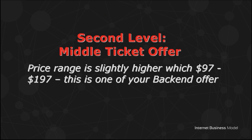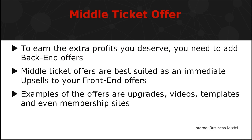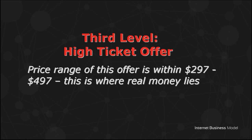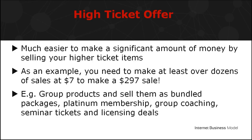The second level is the middle-ticket offer, priced between $97 and $197. Middle-ticket offers are best suited as immediate upsells to your front-end offers. Examples include upgrades, videos, templates, and even membership sites. The third funnel level is the high-ticket offer, priced between $297 and $497 — this is where the real money lies. It's much easier to make significant money by selling higher-ticket items. For example, you need at least 42 sales at $7 to make just one $279 sale. You can group products and sell them as bundled packages, platinum memberships, group coaching, seminar tickets, and licensing deals.